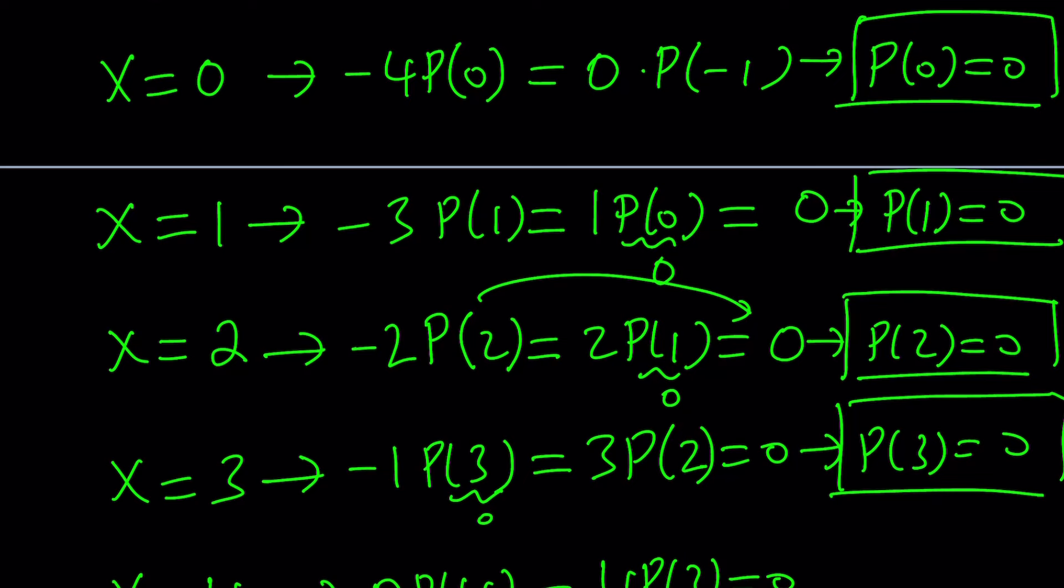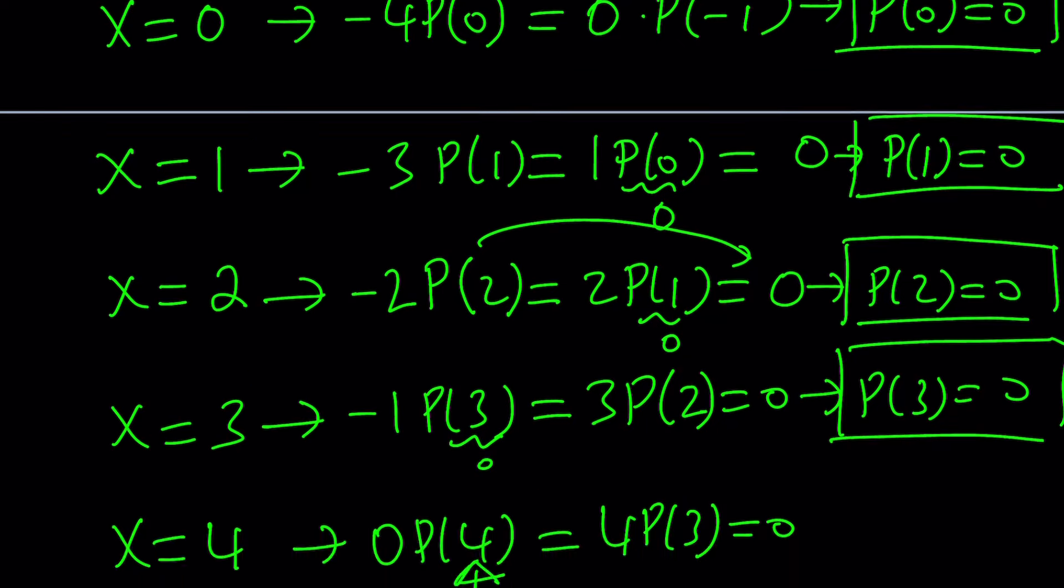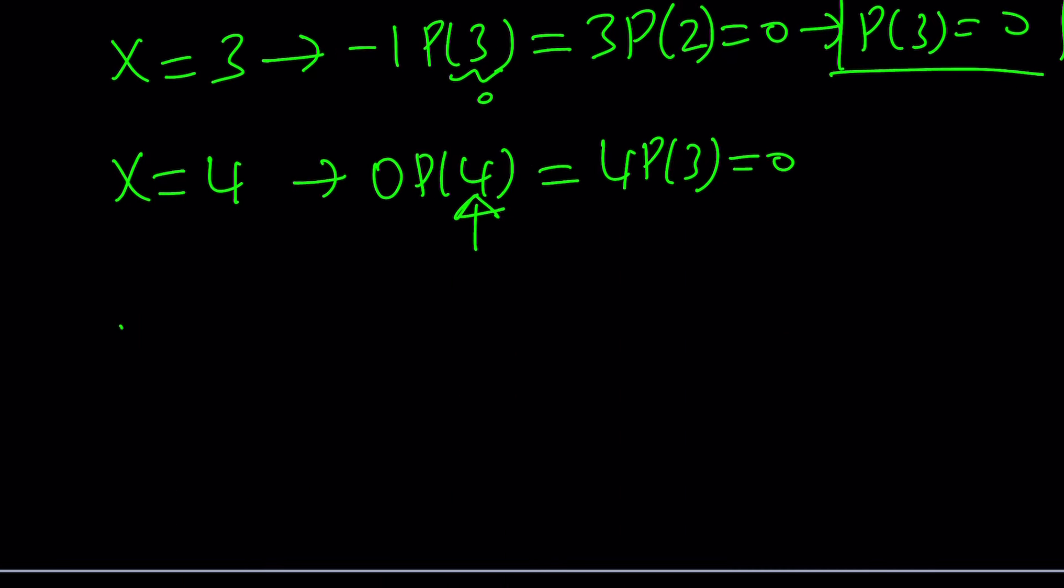P of X is a polynomial, and it probably has roots. And these are the roots. Are these the only roots? We do not know at this point. But we do know that these are some of the roots. And we can basically write P of X, since 0, 1, 2, and 3 are roots, using the factor theorem.